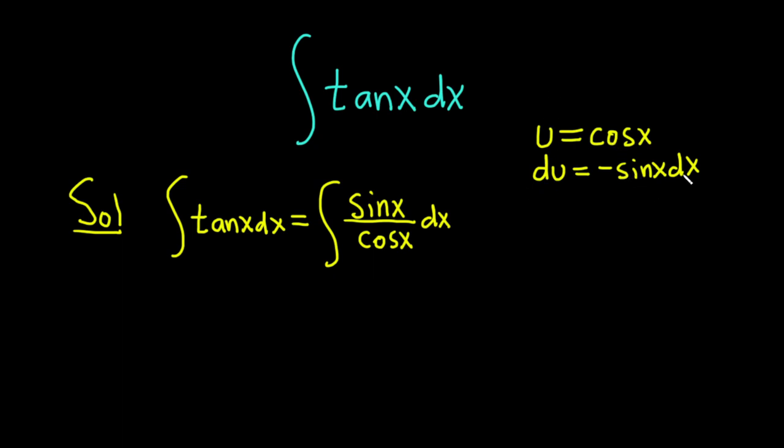And we have negative sine x dx. However, in our problem, we just have sine x dx. So what you want to do is you want to make this piece here, this negative sine x dx, look like what you have in the problem. So we can divide or multiply both sides by negative 1. That will give us negative du equals sine x dx.